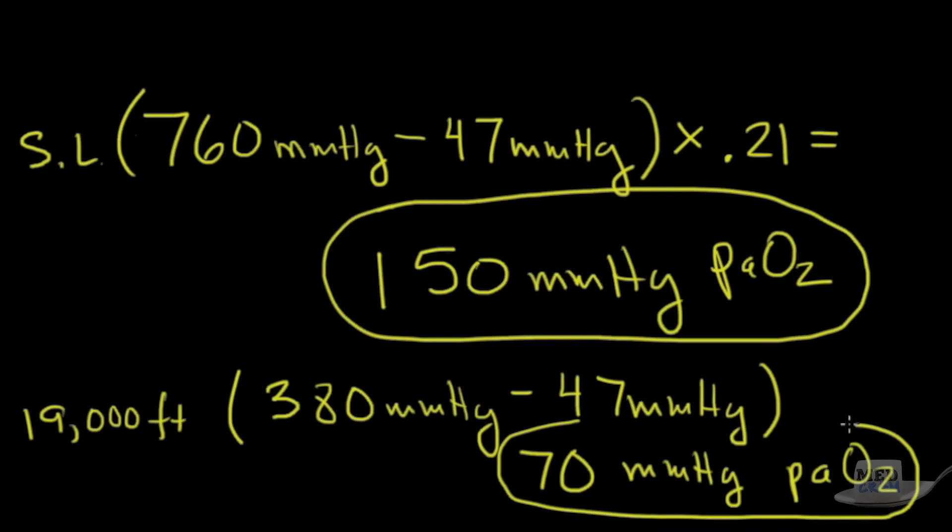And so here we clearly see that the reason why the PaO2 is going down in the blood is because the total barometric pressure has dropped, not because the FiO2 has changed. In fact, it is the same. It's the same 0.21.